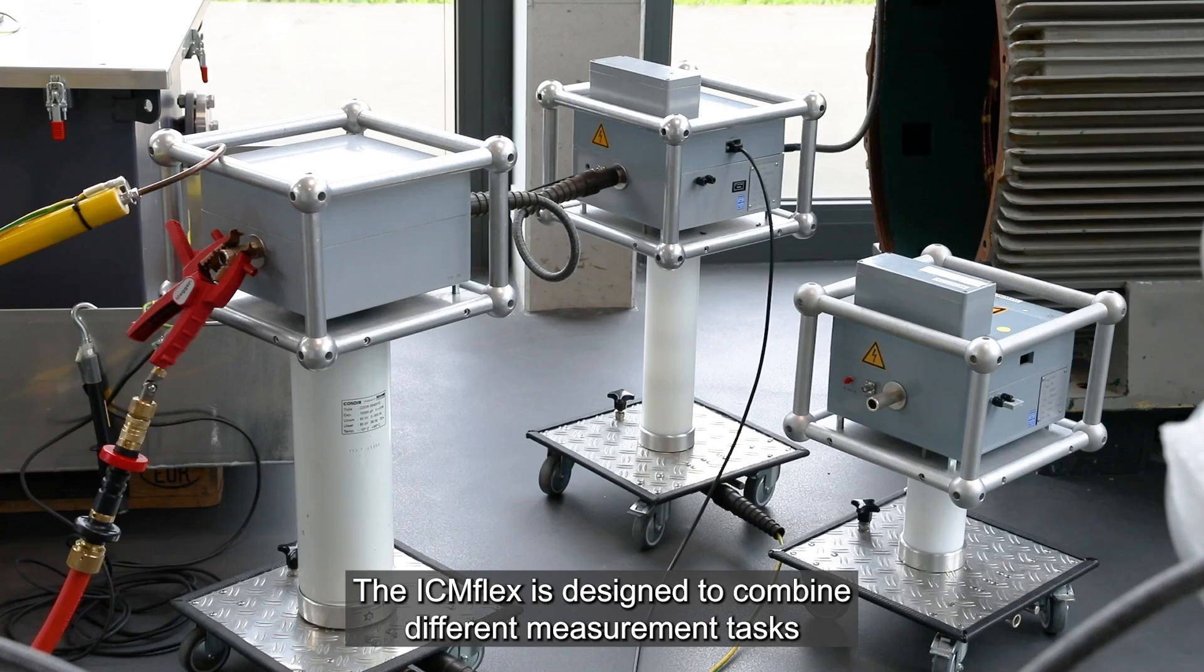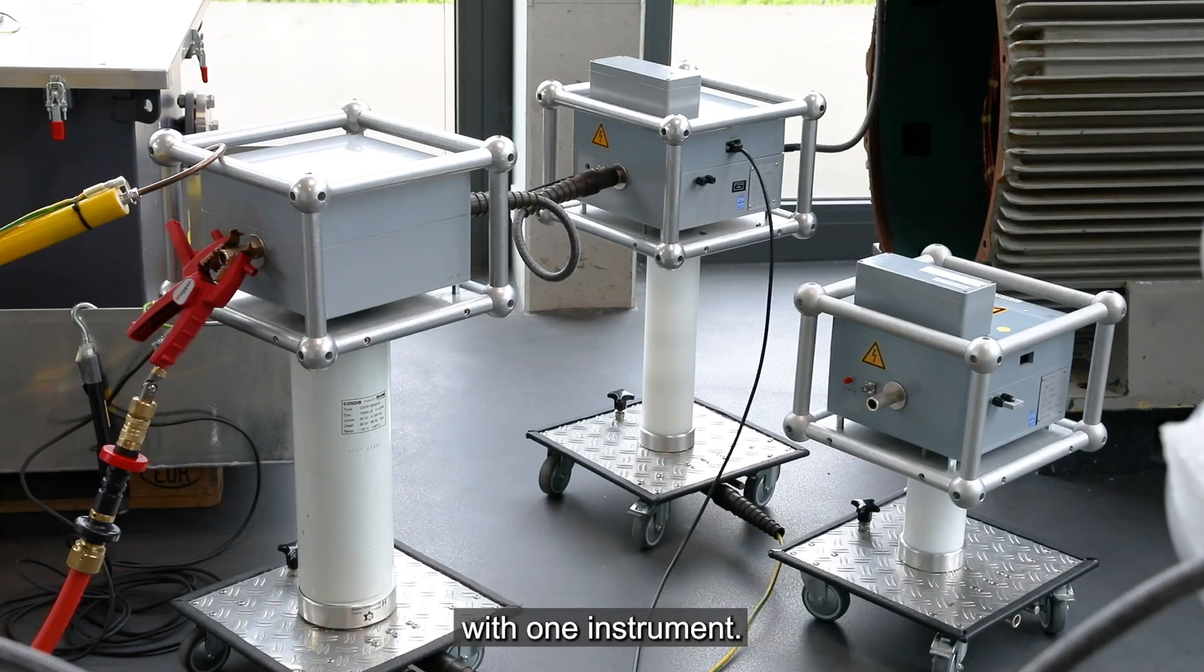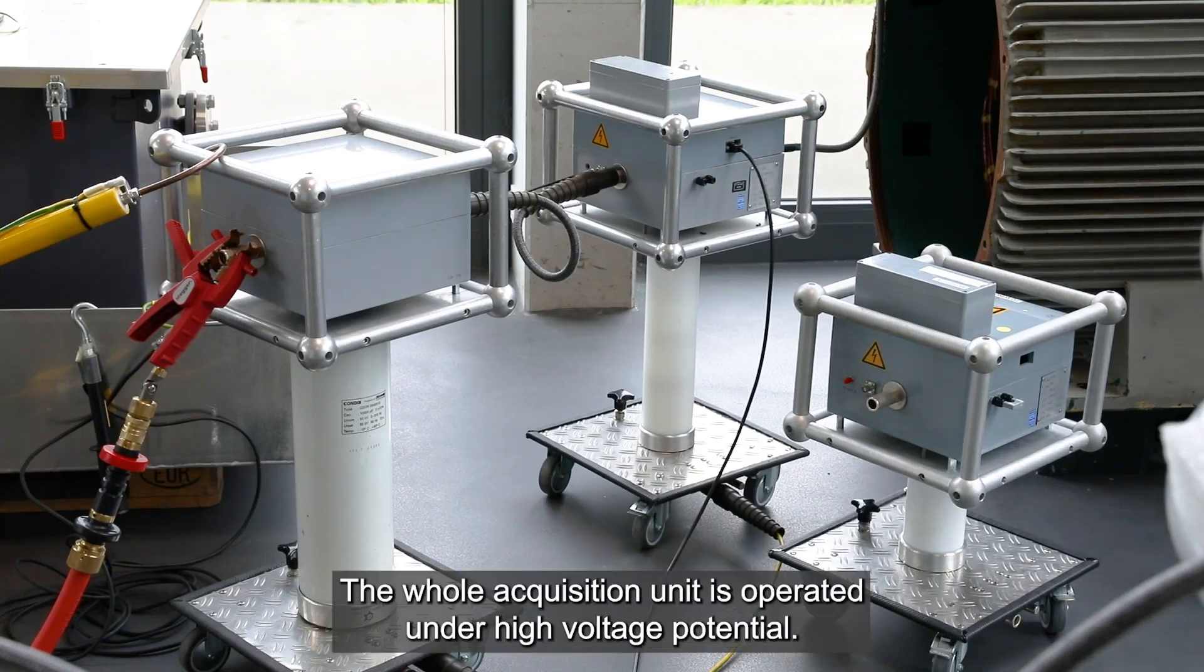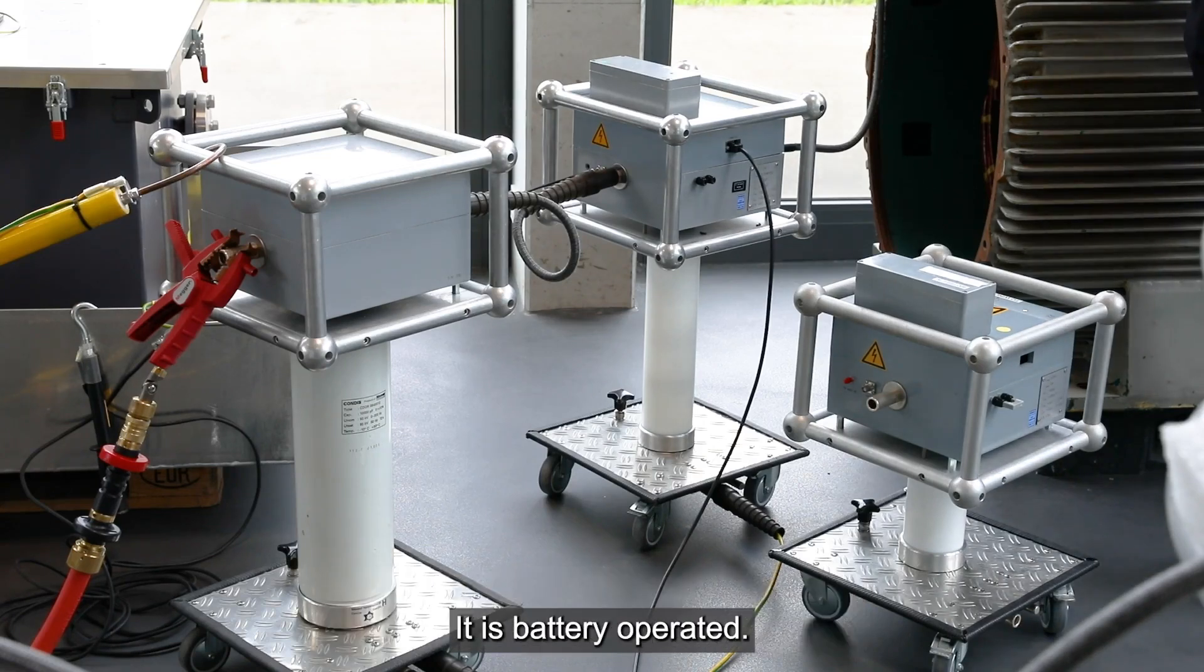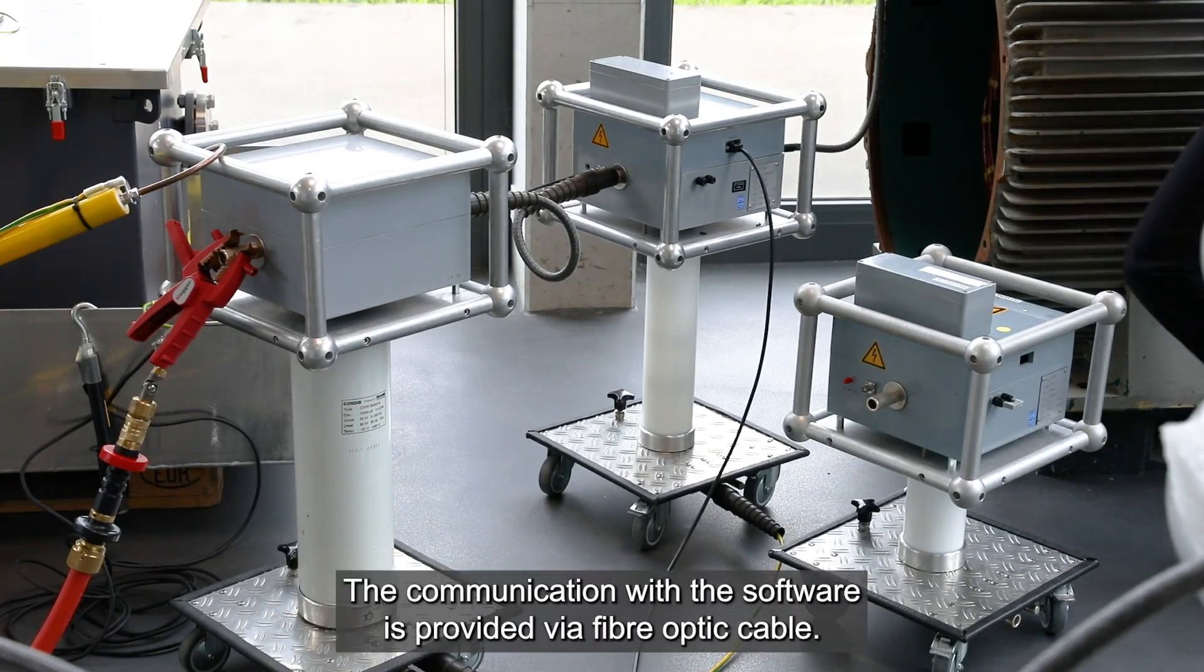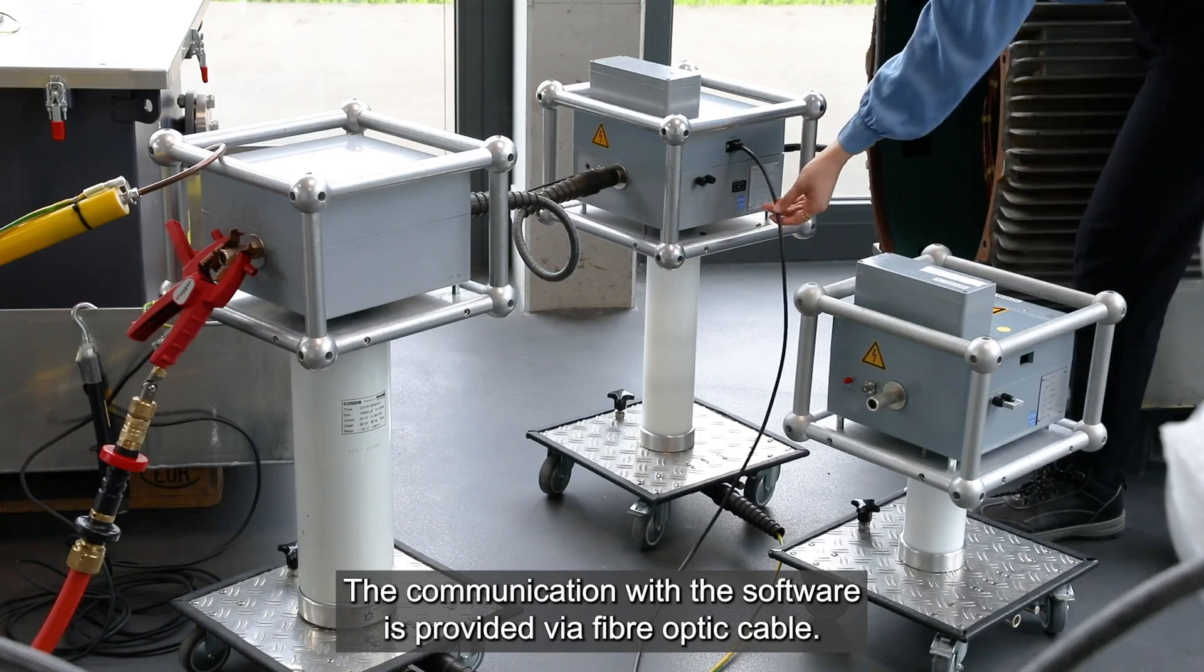The ICM Flex is designed to combine different measurement tasks with one instrument. The whole acquisition unit is operated under high voltage potential. It is battery operated. The communication with the software is provided via fiber optic cable.